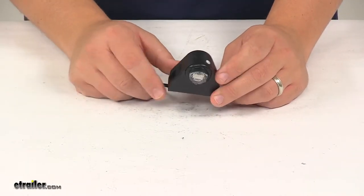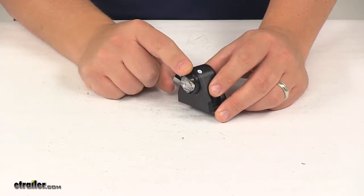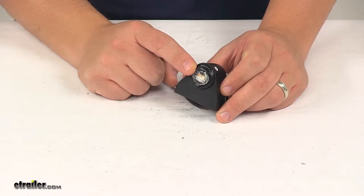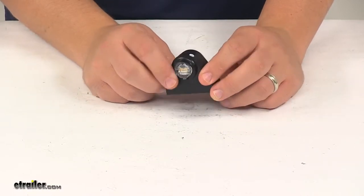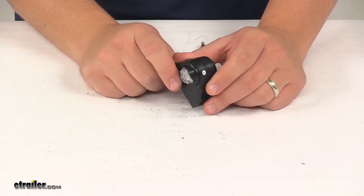Today we're taking a look at the Optronics LED license plate light kit with the bracket and included grommet. This is a three-quarter inch sealed waterproof LED license plate light. It is SAE and Department of Transportation compliant. Features a really nice polycarbonate lens and housing that's very strong and durable.